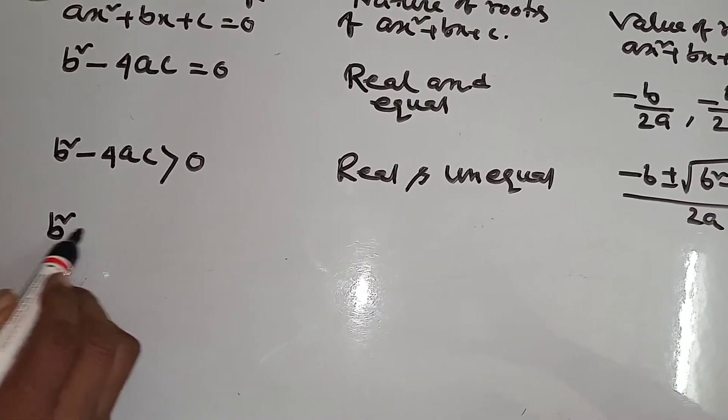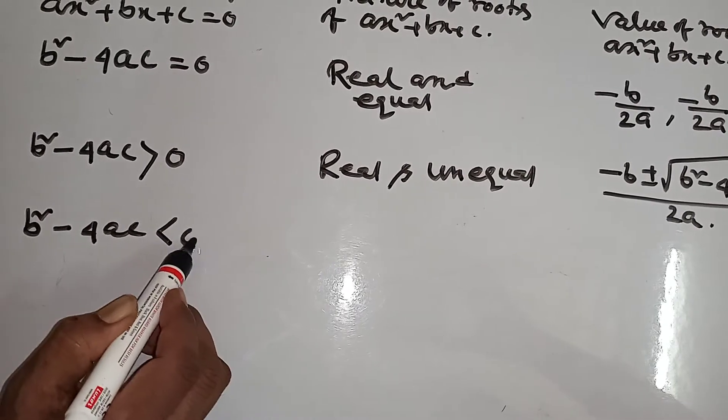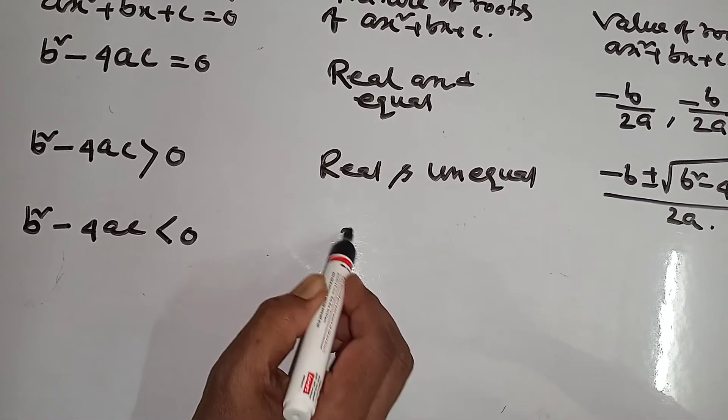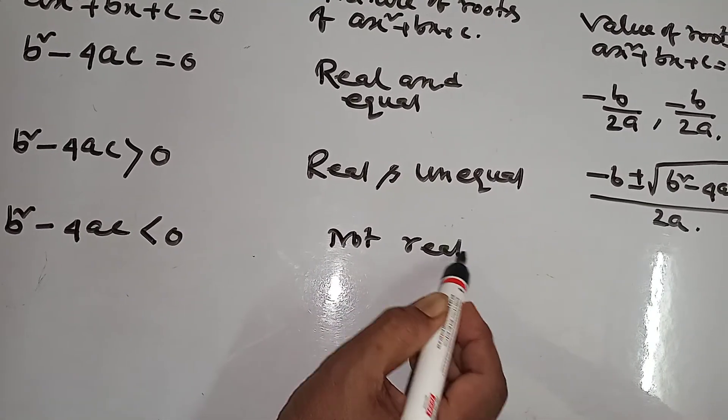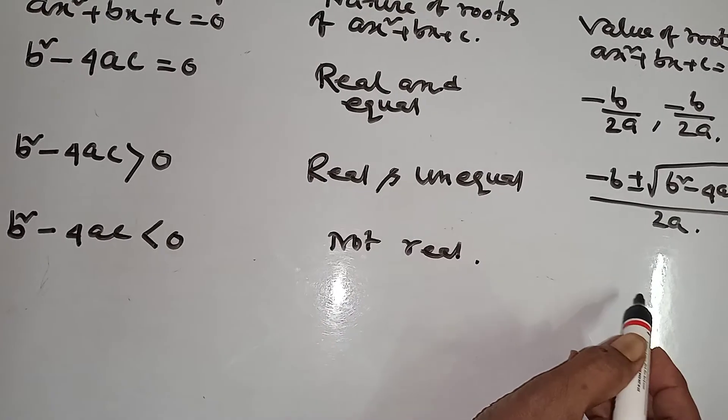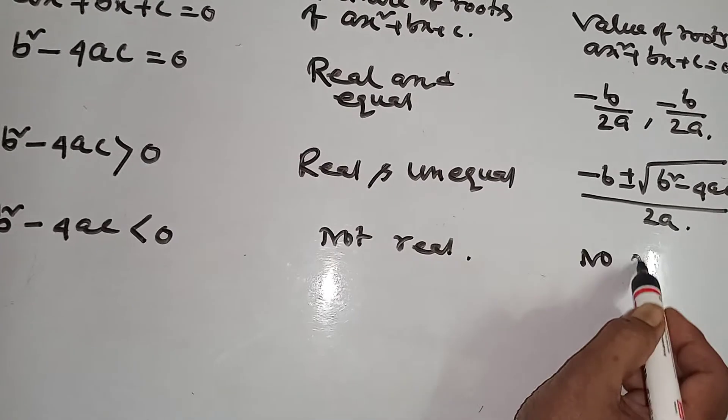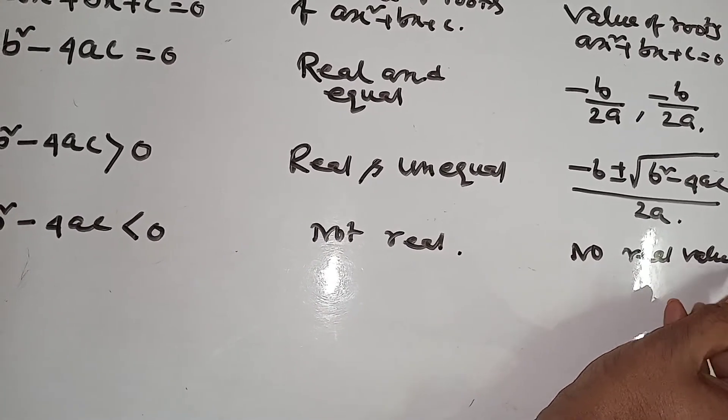Now, if b squared minus 4ac is less than 0, then no real roots.